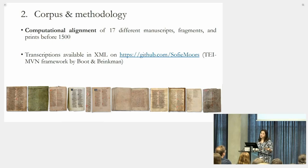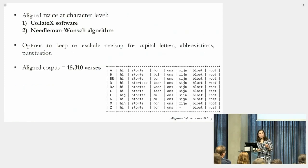To do that, we needed to digitize all those text witnesses, and you can find all my transcriptions on my GitHub page available in XML. We have aligned this corpus at the character level in two ways. First, we used the CollateX software, which is the standard for these research problems. Just for comparison, we also used a more plain out-of-the-box Needleman-Wunsch algorithm. In this alignment, we had options to keep or exclude my markup for capital letters, abbreviations, and punctuation. My total corpus consists of 15,310 verses. Here you see an example of such an alignment of one of my verses.